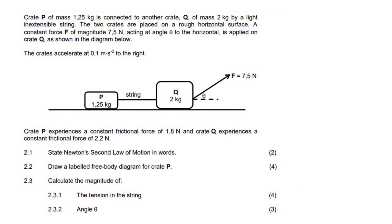Crate P of mass 1.25 kilograms is connected to another crate Q of mass 2 kilograms by a light string. The two crates are placed on a rough horizontal surface. A constant force of 7.5 newtons acting at an angle theta to the horizontal is applied. The crates accelerate at 0.1 meters per second squared to the right. Crate P experiences a friction of 1.8 newtons and crate Q experiences a friction of 2.2 newtons.